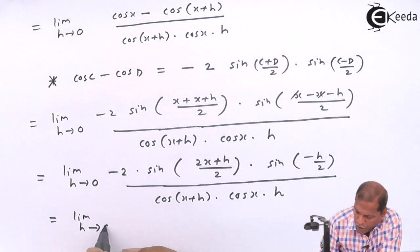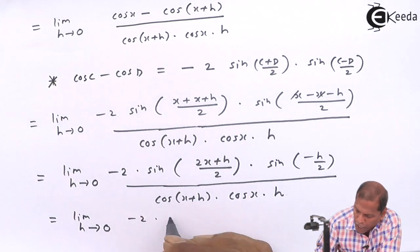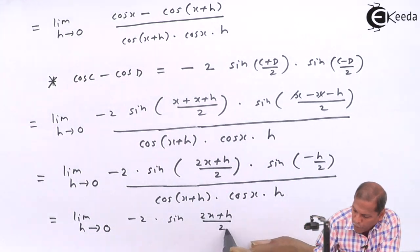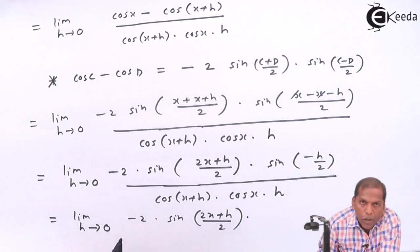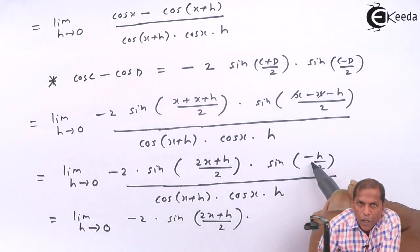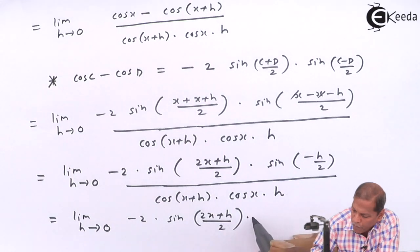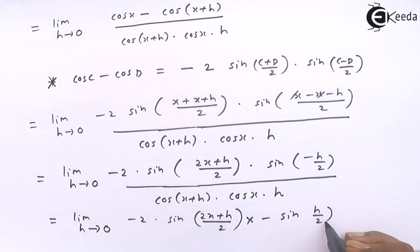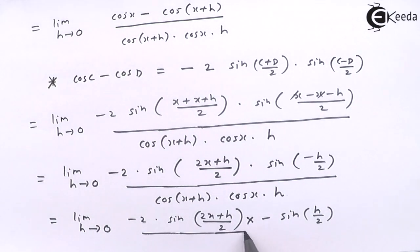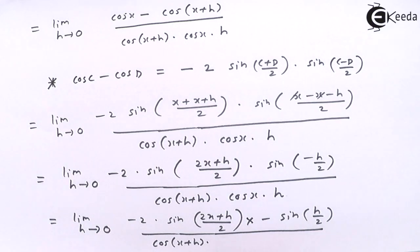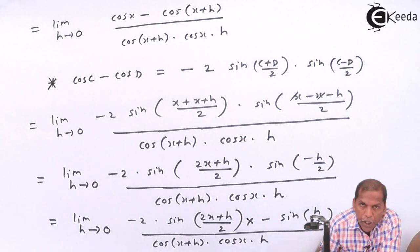The next step will be limit h tends to 0 of minus 2 into sin(2x + h) upon 2, written as it is. Again here we use the trigonometric formula that sin(−θ) gives minus sin(θ), so here we get minus sin(h/2). The minus 2 and the whole thing is divided by cos(x + h) into cos(x) into h.